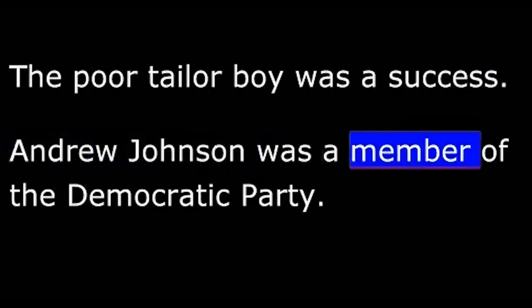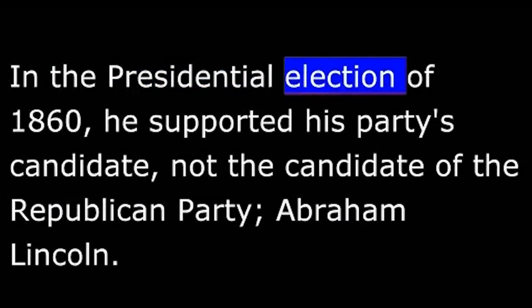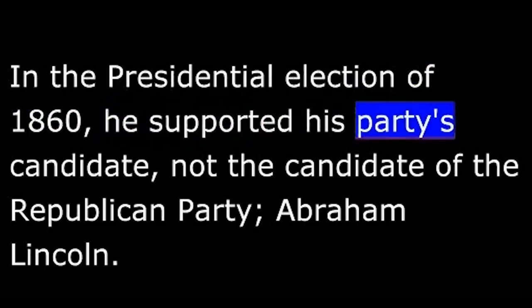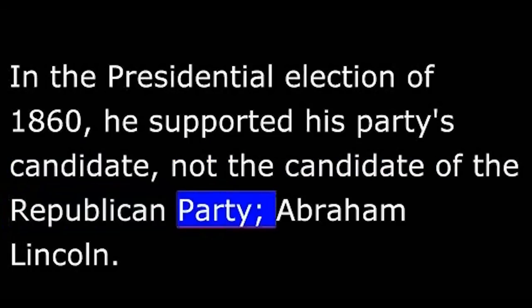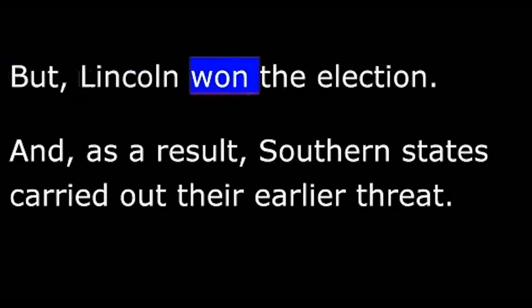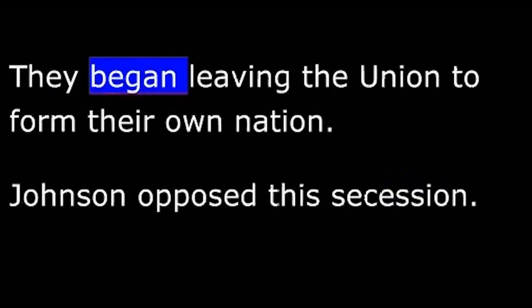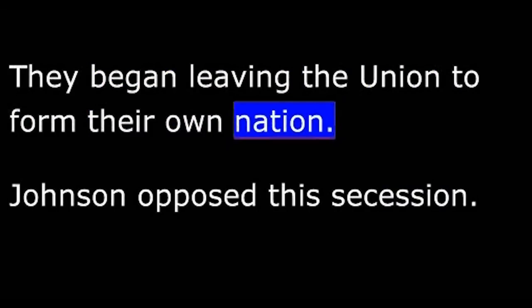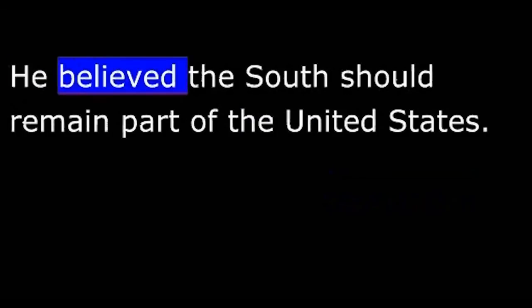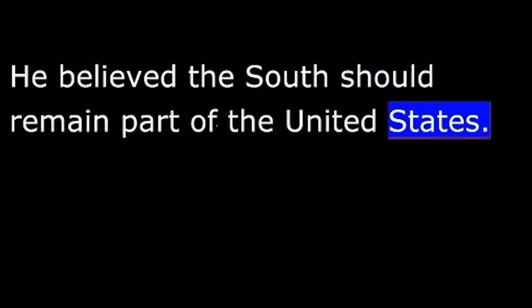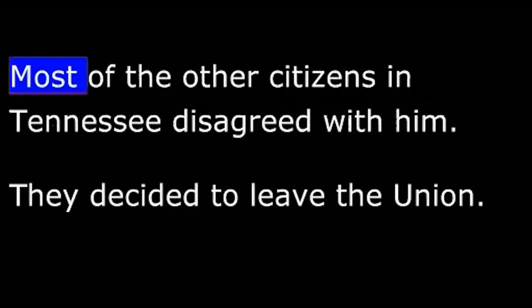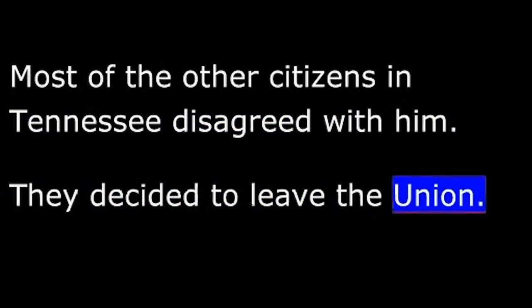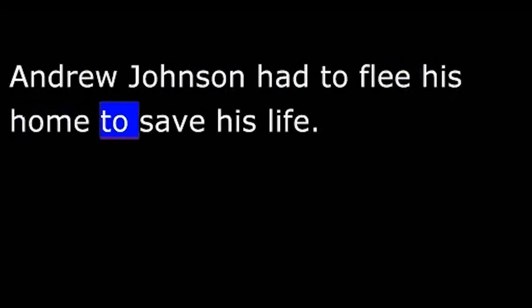Andrew Johnson was a member of the Democratic Party. In the presidential election of 1860, he supported his party's candidate, not the candidate of the Republican Party, Abraham Lincoln. But Lincoln won the election, and, as a result, southern states carried out their earlier threat. They began leaving the Union to form their own nation. Johnson opposed this secession. He believed the South should remain part of the United States. He decided he had no choice but to support the Republican president. Most of the other citizens in Tennessee disagreed with him. They decided to leave the Union.